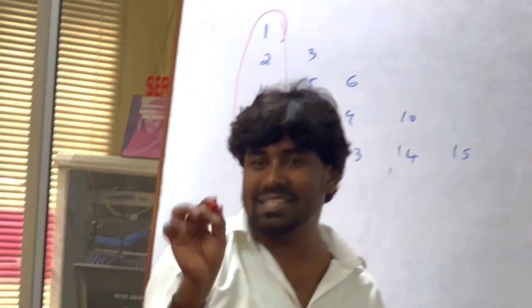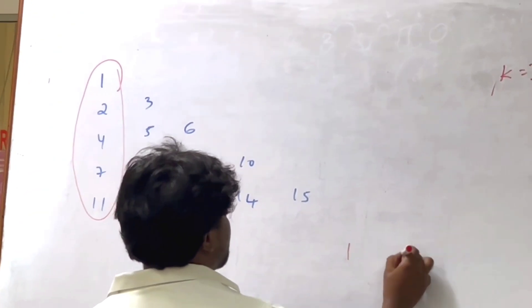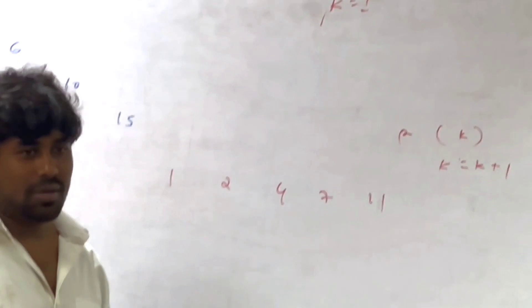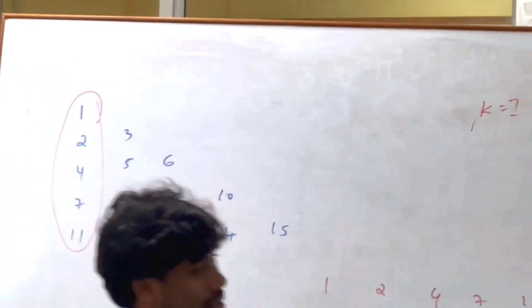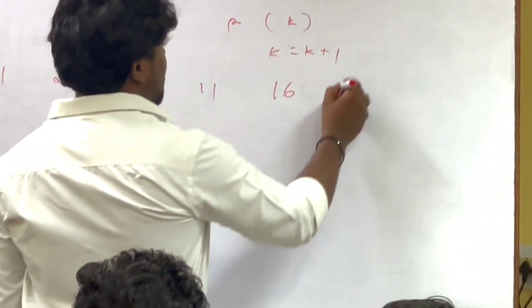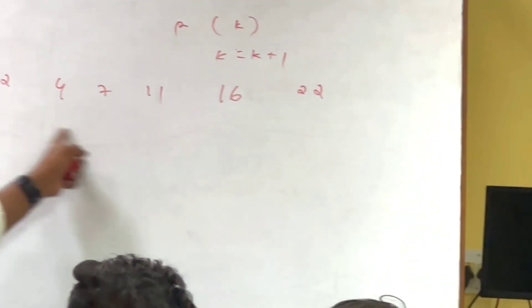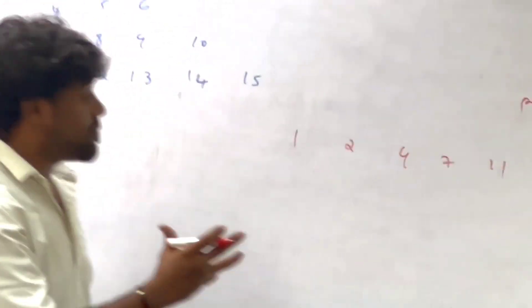What you want to do now is always take the series. This is the new series: 1, 2, 4, 7, 11. What is your next number? 16. Yes sir. What is your next number? 22. If you are telling this, you are telling some logic. Now you have to figure out what is the logic behind this one.